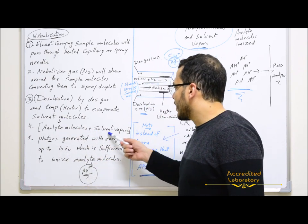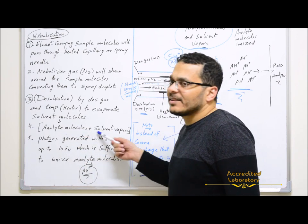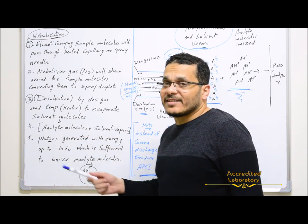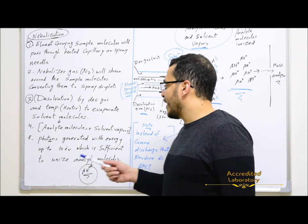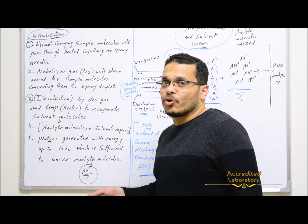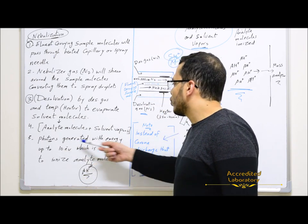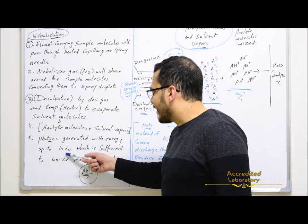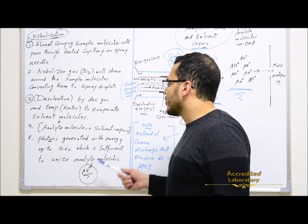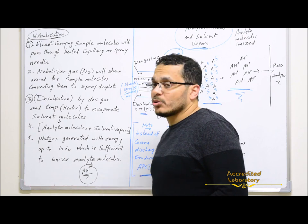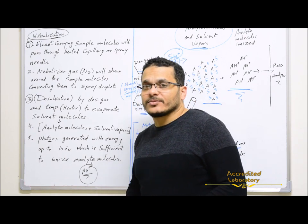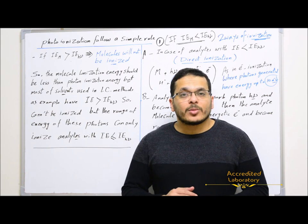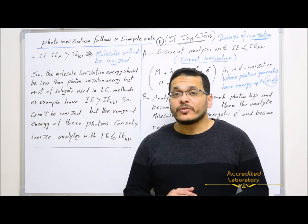Analyte molecules and solvents will be generated. Then, by photons generated by the UV lamp, discharge lamp, or krypton lamp, these photons with energy up to 10 electron volts, which is sufficient to ionize analyte molecules to get analyte ions. So the sample molecules will be ionized by the photons generated by the UV light.